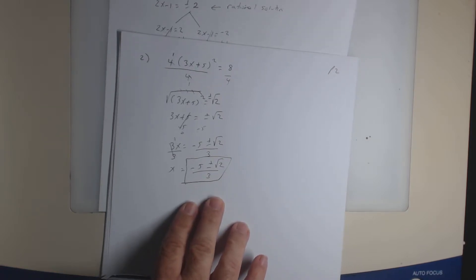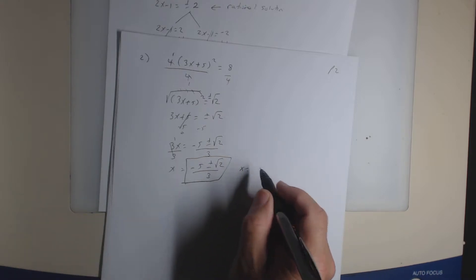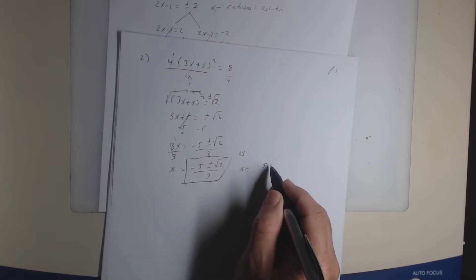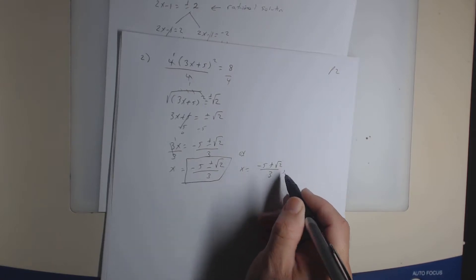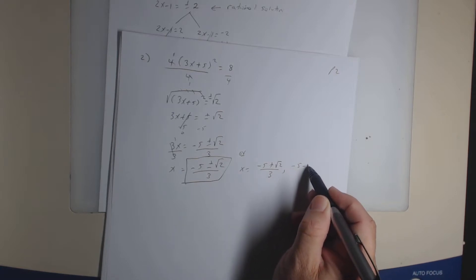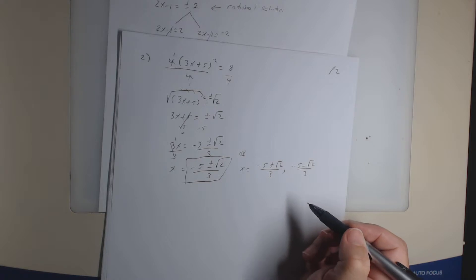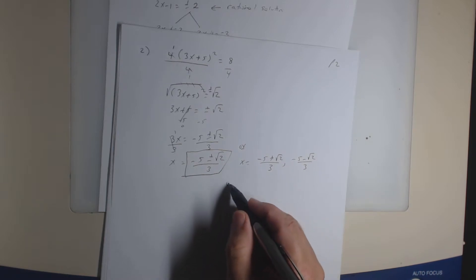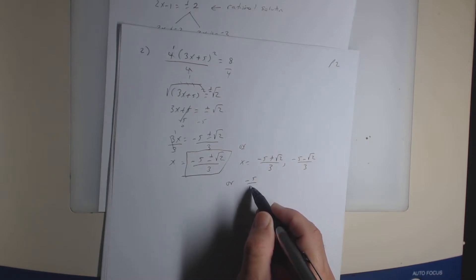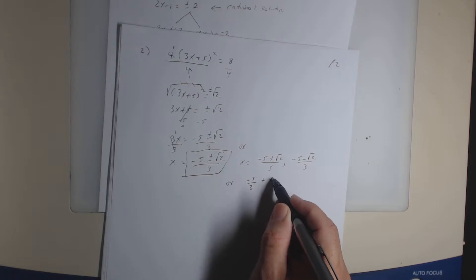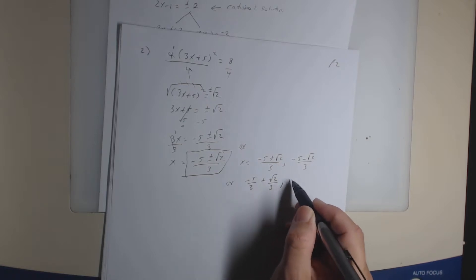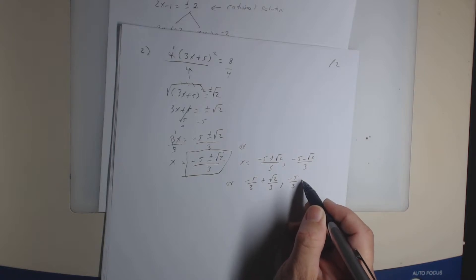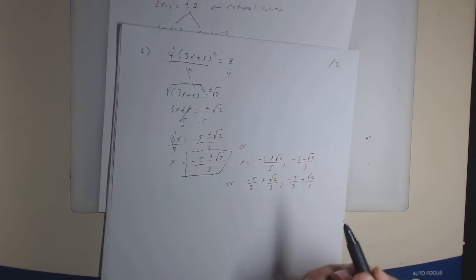That's your answer in compact form. In MyMathLab, they're probably going to ask you to write it as two separate equations separated by a comma. So you would say x equals (negative 5 plus square root of 2) over 3, and x equals (negative 5 minus square root of 2) over 3. If you want to write it as two separate fractions you can: negative 5 over 3 plus square root of 2 over 3, and negative 5 over 3 minus square root of 2 over 3. All those are correct ways of writing the answer.